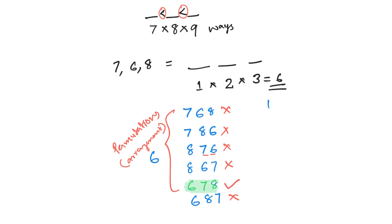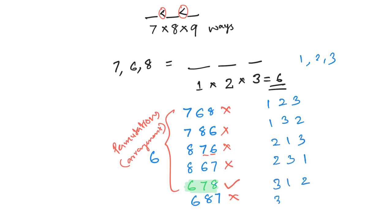Let me take 1, 2, 3. I can write: 1-2-3, 1-3-2, 2-1-3, 3-1-2, 3-2-1. Again, out of these 6 arrangements, only 1 is in increasing order.